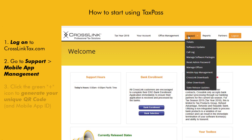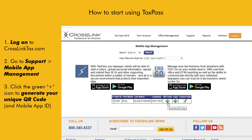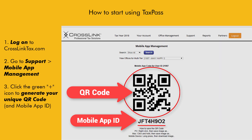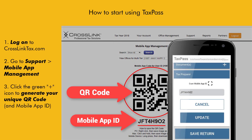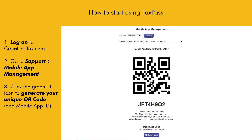Once logged in, go to Support and click Mobile App Management. To the right of your user ID, click the green plus sign under QR code to generate your unique QR code and mobile app ID. This step is important because your customers will either have to scan this QR code image or type the mobile app ID once they start using TaxPass. Either can be used to identify your tax office on the TaxPass app and route submitted data directly to your Crosslink software. If you want, you can also save the QR code to your PC as an image or jot down the mobile app ID to share with your customers.